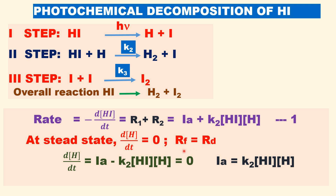At steady state approximation, the rate of formation of the intermediate equals the rate of decomposition of the intermediate. In the first step the hydrogen atom is formed, so its rate is R₁, directly proportional to the intensity of photons — that is Ia. This equals K₂ times the concentration of HI times the concentration of H. Substituting Ia into the rate expression gives: rate = 2 × Ia.